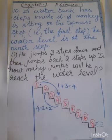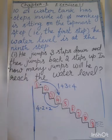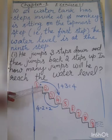So, 9th step. The water level is at that 9th step. Now, move to first step. He jumps 3 steps down. The position of the monkey is step 1.